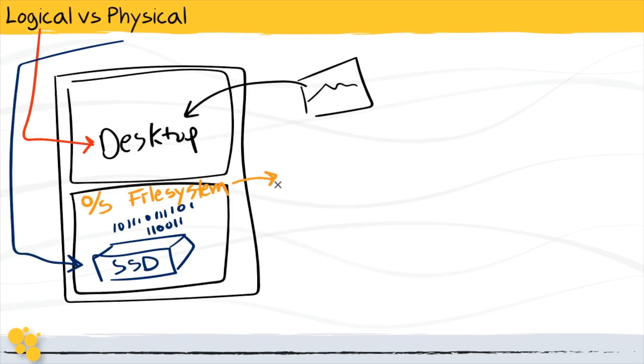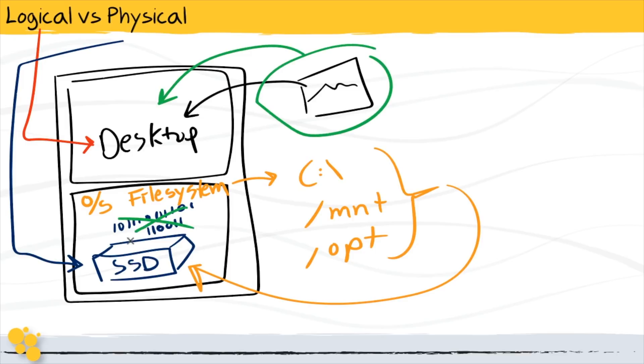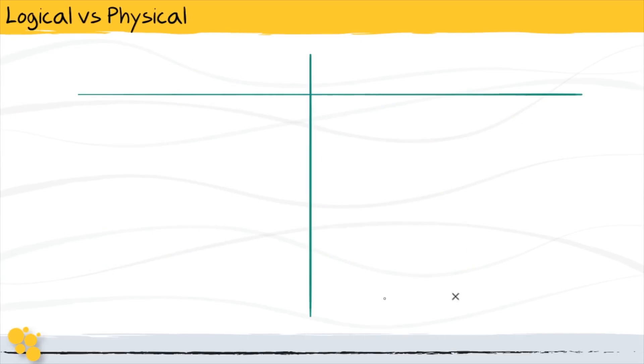This is where the notion of like my C drive or any of those mount points or directories that you might have in a Linux file system come from. These are logical references that point to some part of or the entirety of some other physical device. In the end, the good news is I don't have to think about writing binary because the operating system and the file system that it created provided that necessary abstraction for me. Abstraction for the win.